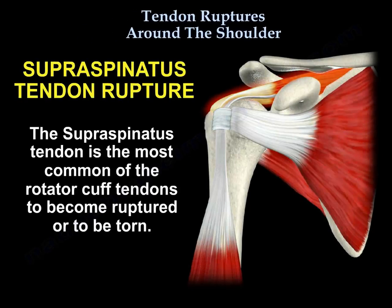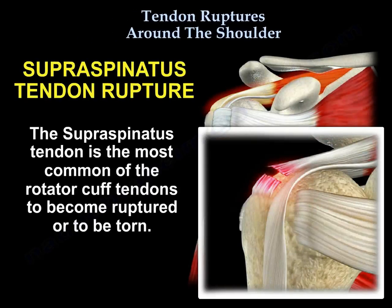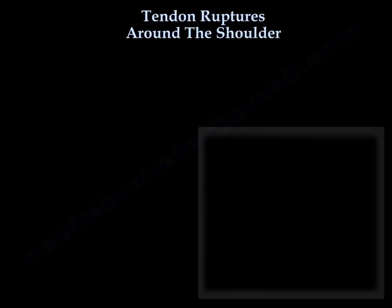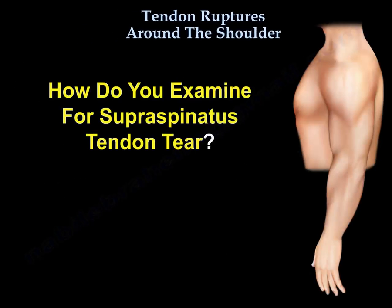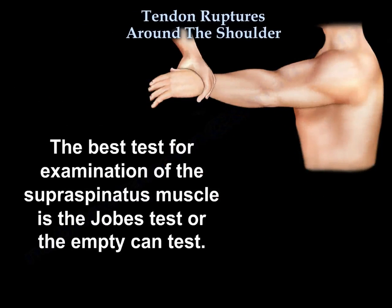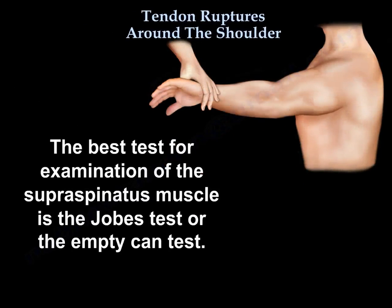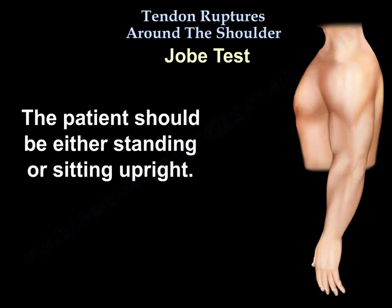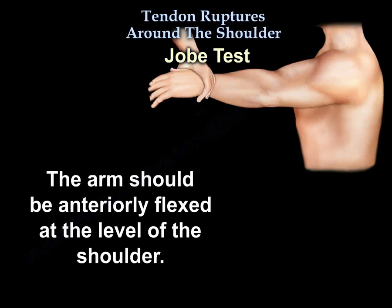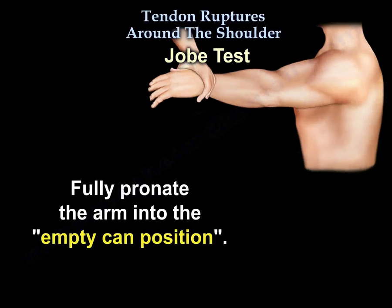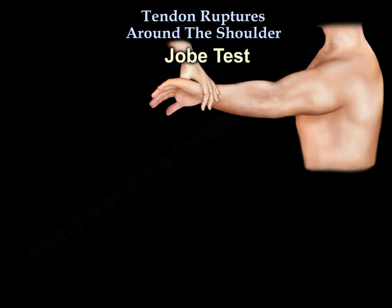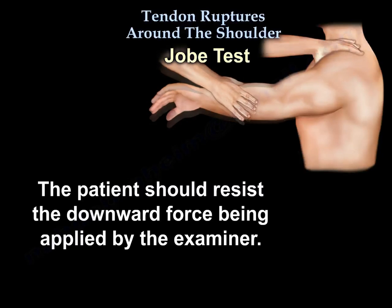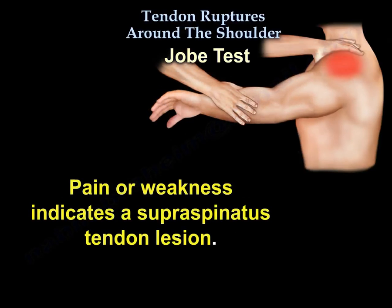The supraspinatus tendon is the most common of the rotator cuff tendons to be ruptured or torn. The best test for examination of the supraspinatus muscle is Jobe's test, or the empty can test. The patient should be either standing or sitting upright. The arm should be anteriorly flexed at the level of the shoulder and fully pronated into the empty can position. The patient should resist the downward force applied by the examiner. Pain or weakness indicates a supraspinatus tendon lesion.